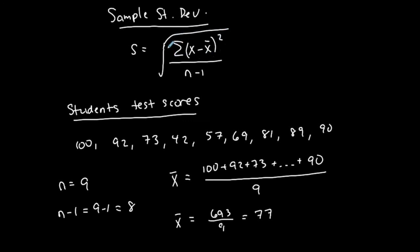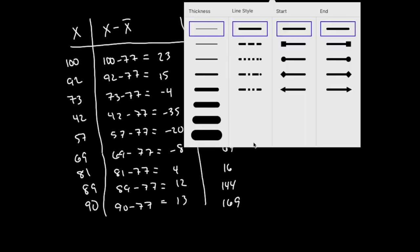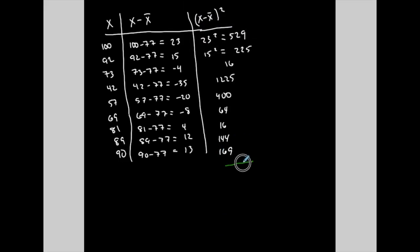Now this portion tells me to take the sum of that column. So now if I take the sum of that column, let's add up this column. If I add up this column here, that represents the sum of what this column is, which is each value minus the mean squared. So let's add that up. 529 plus 225 plus 16 plus 1225 plus 400 plus 64 plus 16. Add them all up. I got 2788.